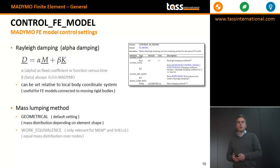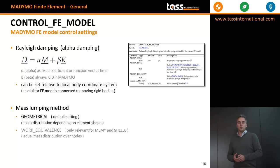Another parameter you can set under control FE model is the mass lumping method. There are two options for this: geometrical and work equivalent, where we normally stick to the geometrical option.